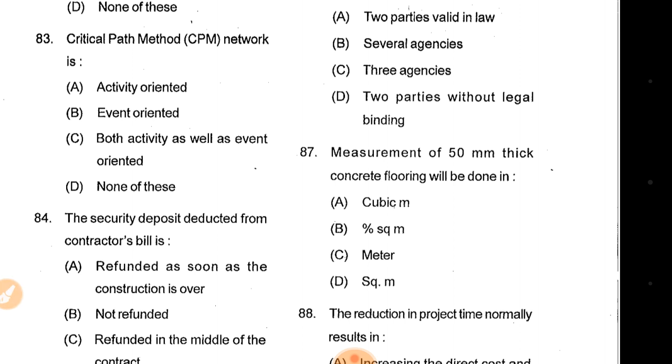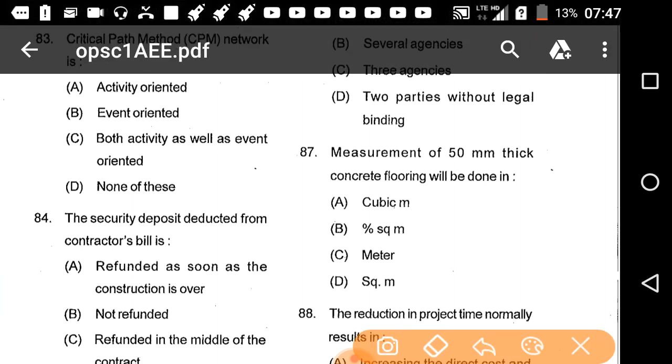Question 87: Measurement of 50 mm thick concrete flooring will be done in square metres. Option D is the correct answer.